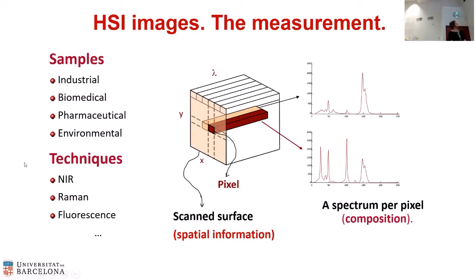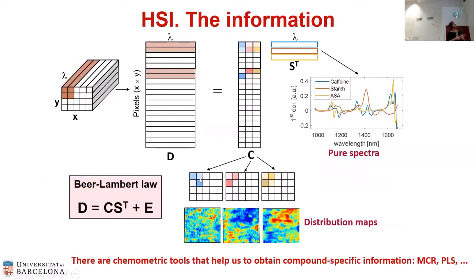Nowadays we have imaging systems using many kinds of spectroscopies and spectrometers — we also have mass spectrometry imaging — and this can be used in many different contexts. This image represents an enormous amount of spectra: thousands, even millions, depending on the platform we use.